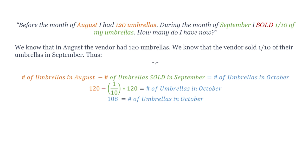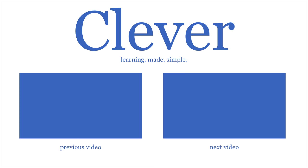Using our calculator, we can see that there would be 108 umbrellas for the number of umbrellas in October. So we can say the vendor still has 108 umbrellas on stock. Thanks for joining me. To see the previous video, click left. And to see the next video, click right. Thanks.